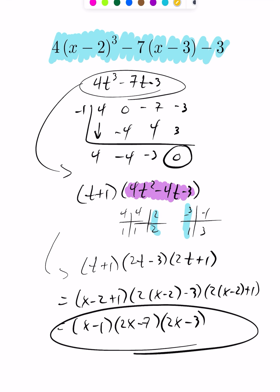The polynomial factors into (x-1)(2x-7)(2x-3). This is an example of doing a substitution, going through synthetic division, factoring the polynomial like a normal quadratic after synthetic division, then re-substituting the t value, which is x-2, and cleaning it up.